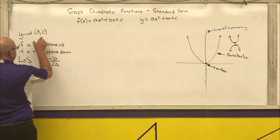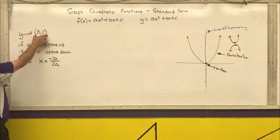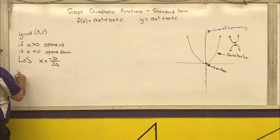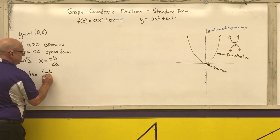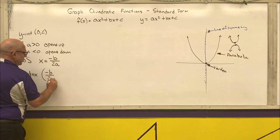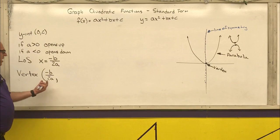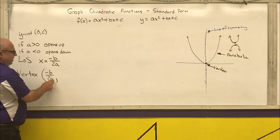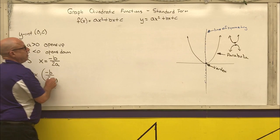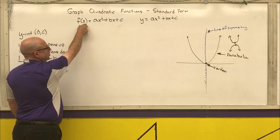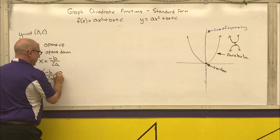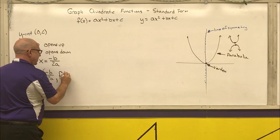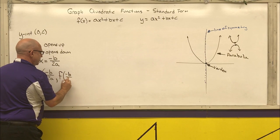So, the y-intercept is at (0, c), and for the vertex, the x-coordinate is negative b over 2a. If you want the y-coordinate of the vertex, you take that x-coordinate and substitute it into the function. So the vertex y-coordinate is written as f of negative b over 2a.